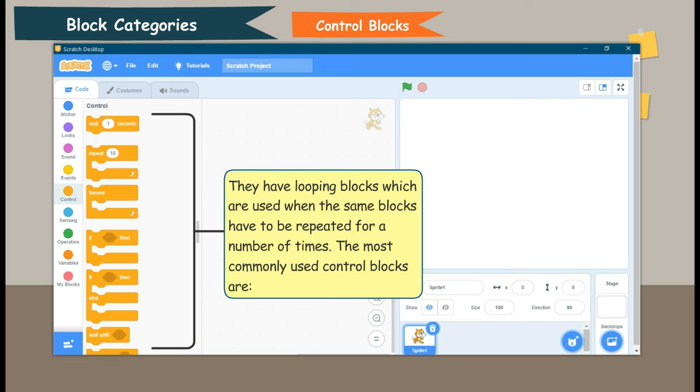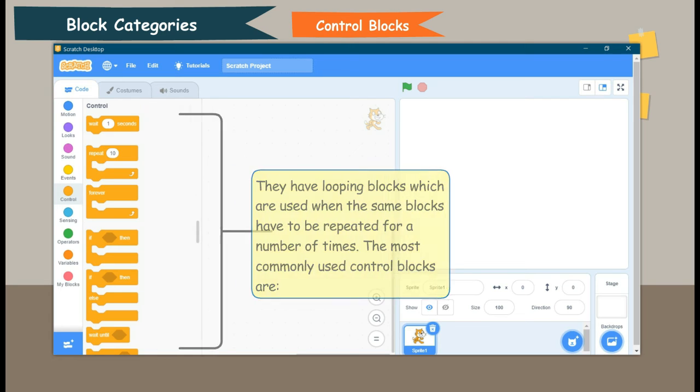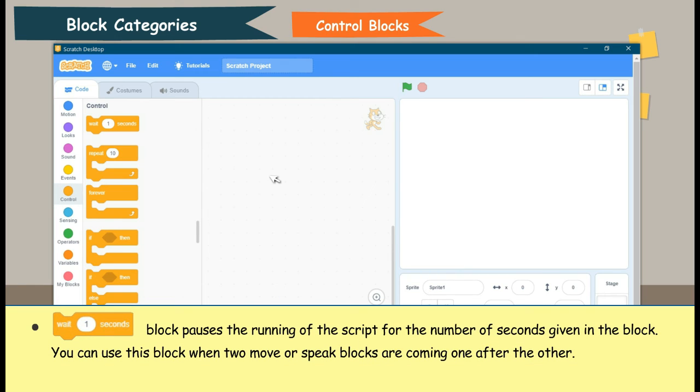The most commonly used control blocks are Wait one seconds block pauses the running of the script for the number of seconds given in the block. You can use this block when two move or speak blocks are coming one after the other.